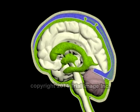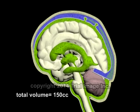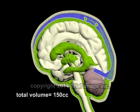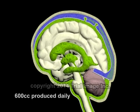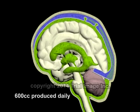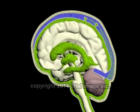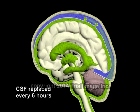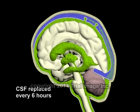The total volume of cerebrospinal fluid at any given moment is about 150 cc's in an adult. Approximately 600 cc's of cerebrospinal fluid is produced each day via blood filtration in the choroid plexus. So if you do the math, 100% of the volume of cerebrospinal fluid turns over every 6 hours, or 4 times a day.